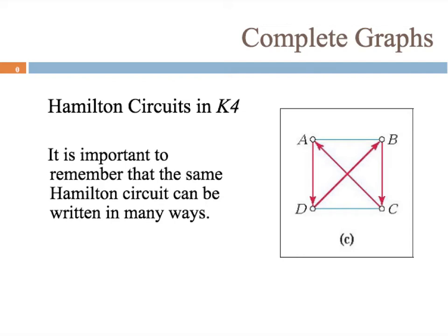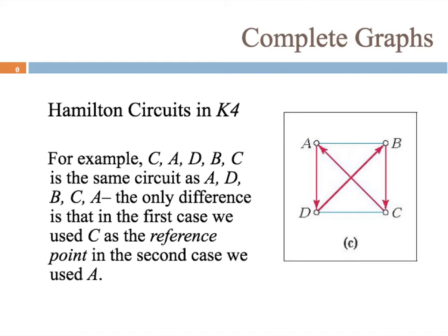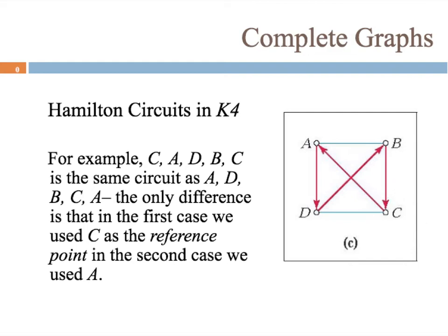It is important to remember that the same Hamilton circuit can be written in many ways. For example, starting at c we can write c, a, d, b, c. This is essentially the same as starting at a different point: a, d, b, c, a — we're still following all the same arrows in the same directions. The only difference is the reference point, or starting point. In the first example c is the reference point; in the second, a is the reference point.